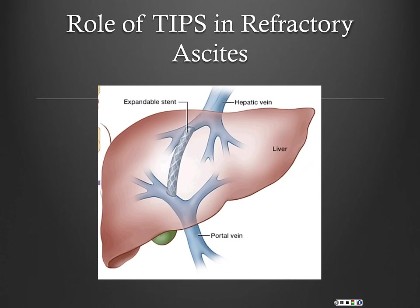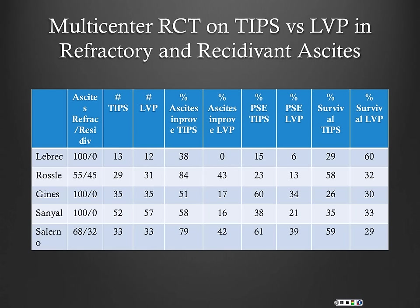TIPS is a fairly good therapy for refractory ascites, though it carries some risks. The data has gone back and forth, but some newer data has been more impressive. These are a few multicenter RCTs, and the important thing is looking at survival in TIPS versus LVP.